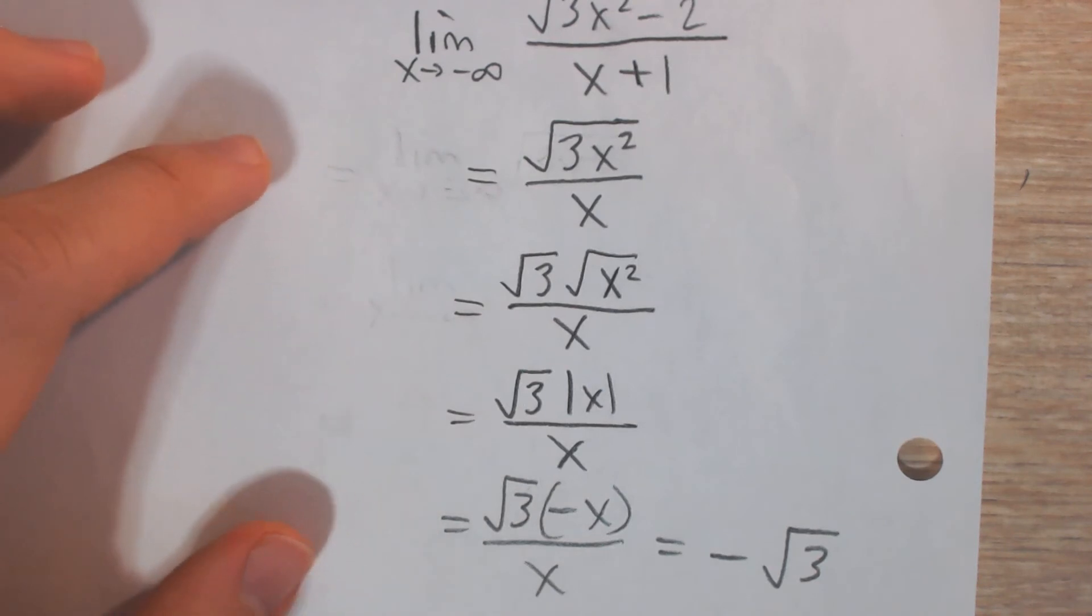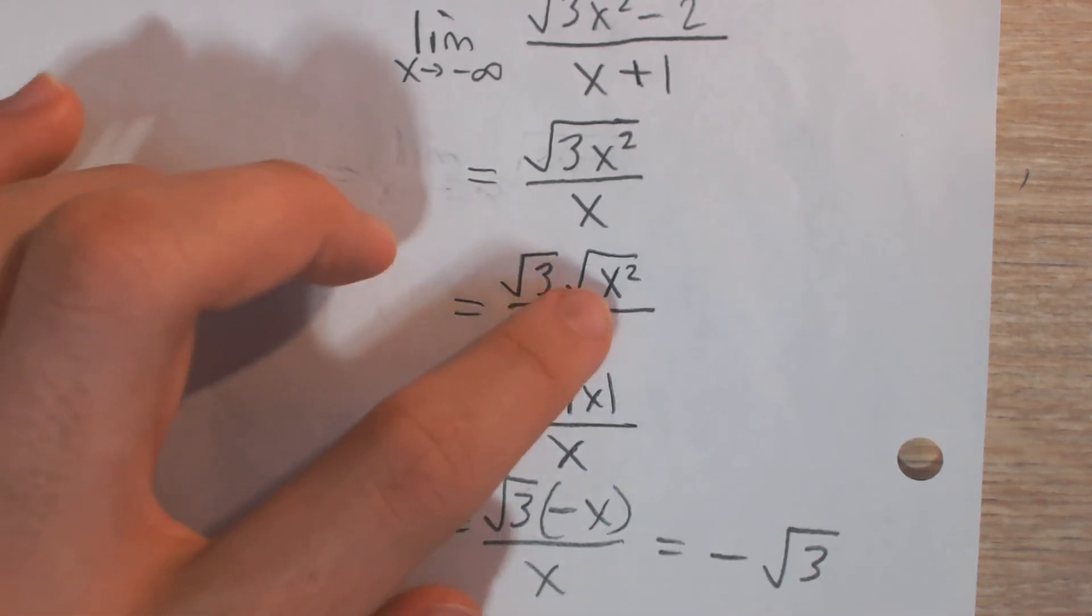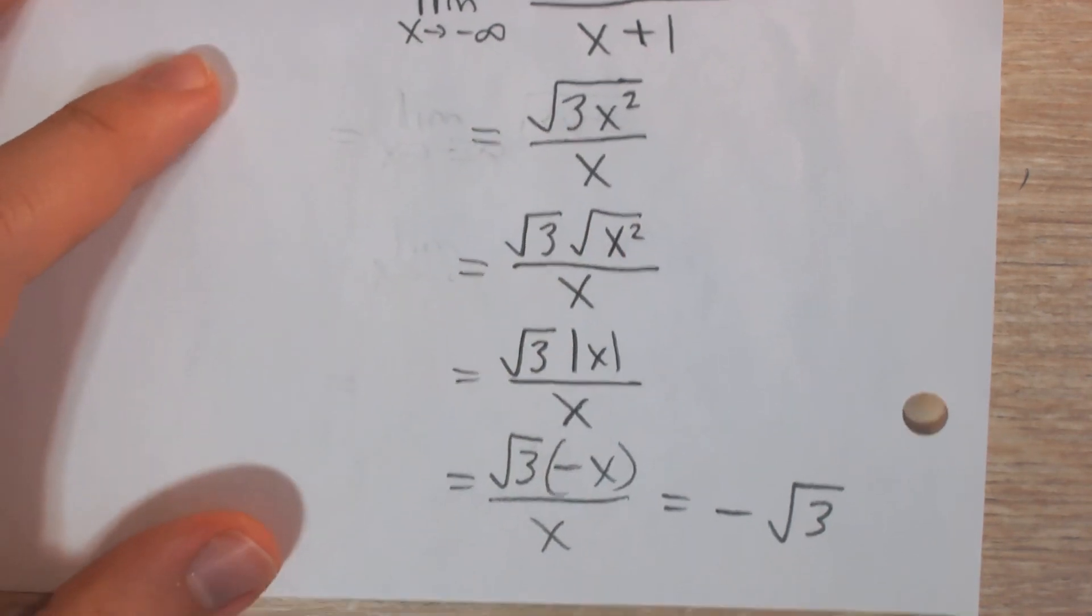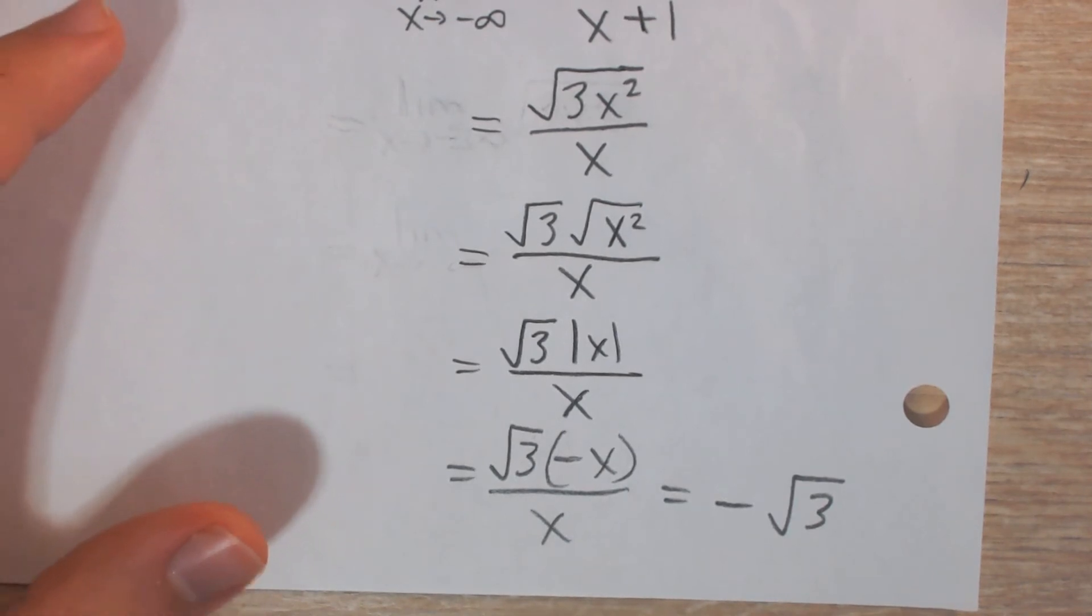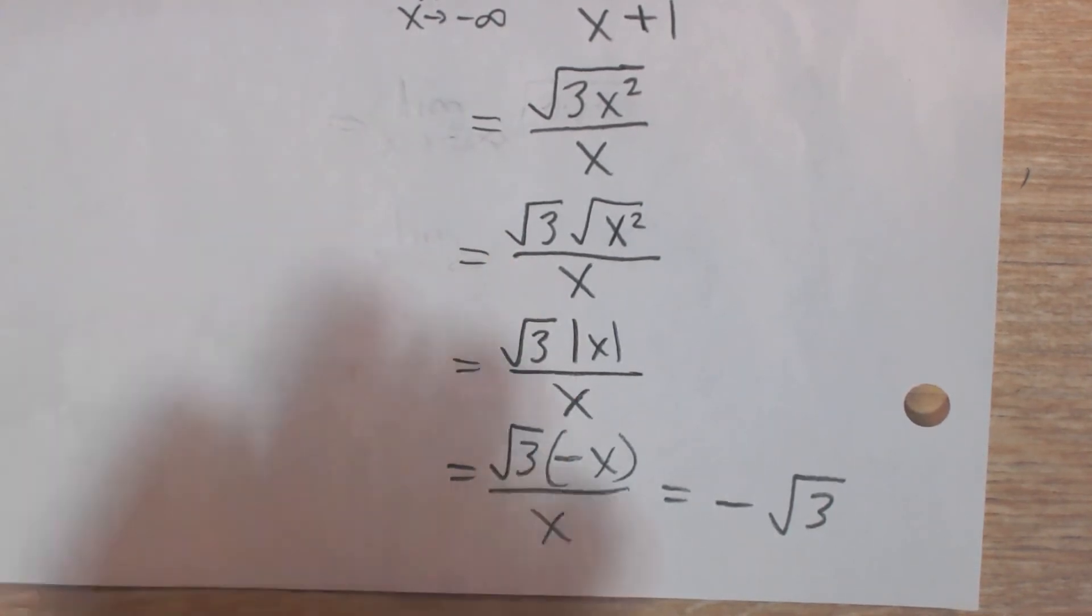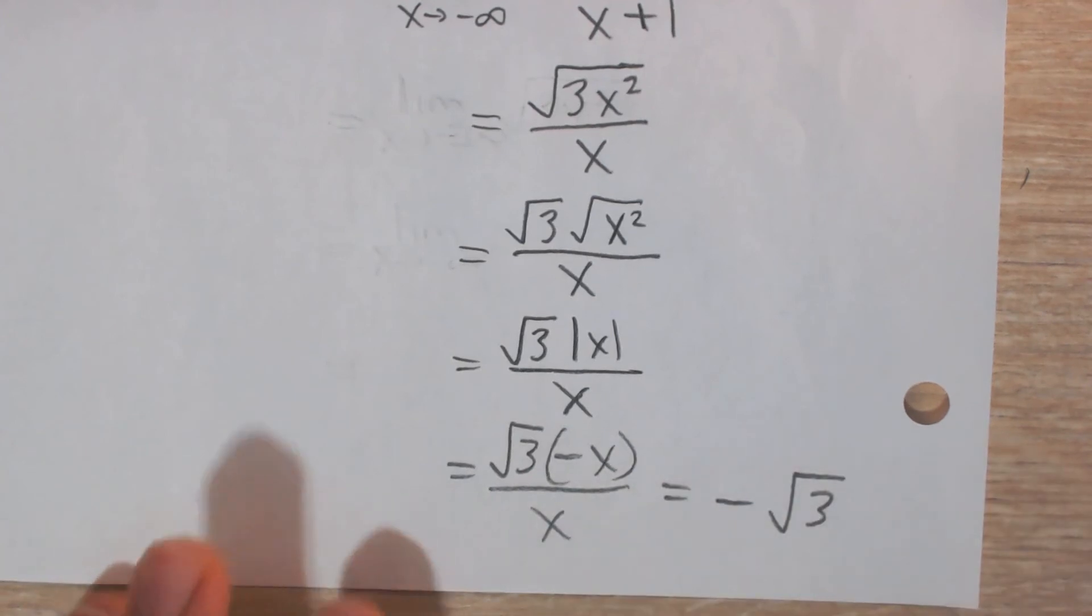And again, square root of x squared is absolute value of x, right? Because when we square it, it always becomes positive. And in this case, because we're approaching negative infinity, absolute value of x is negative x. And now you can see the x's will sort of cancel.